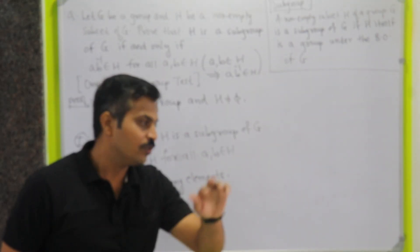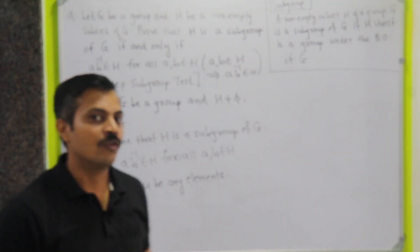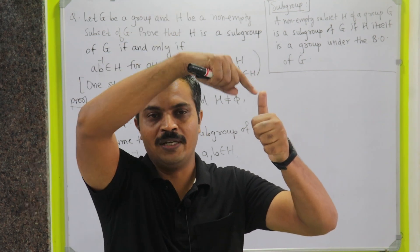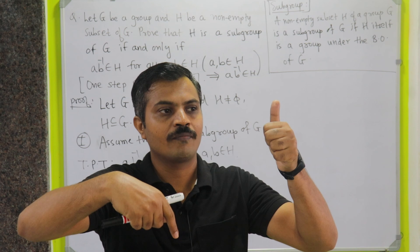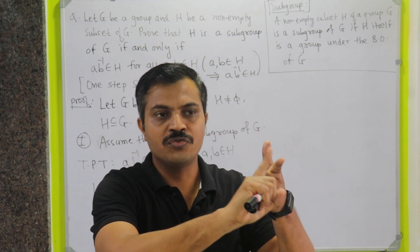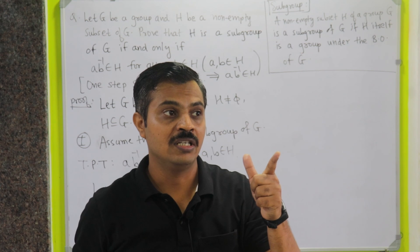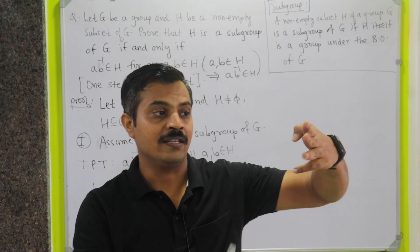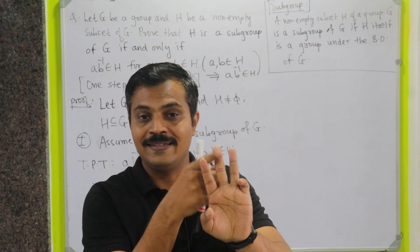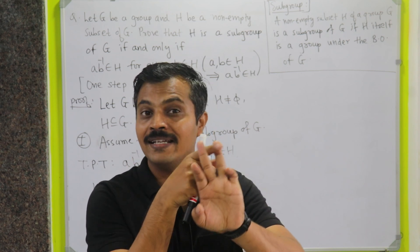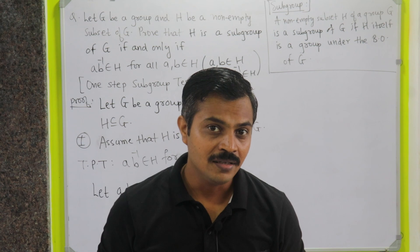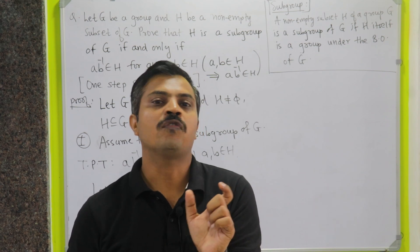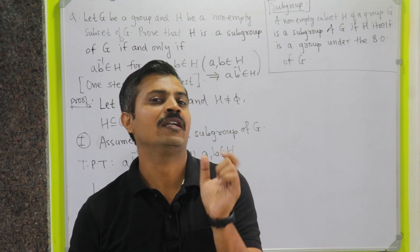We have assumed H is a subgroup of G. It means we already know that H is a group under the binary operation of G. H is already non-empty together with binary operation. The three properties are satisfied: elements of H are associative, existence of identity in H, and existence of inverse in H. If you have an element of H, then you will be able to find inverse of that element in H only.